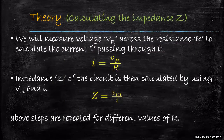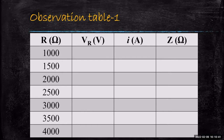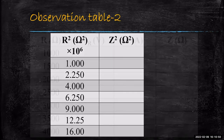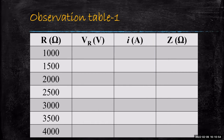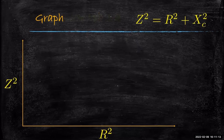Let's look at the observation table. The first column is R — different values of R. The second column is the voltage across the resistance VR. The third column is the current calculated using Ohm's law, and the fourth column is Z calculated from Vin and I. For demonstration we take R values from 1000 to 4000 ohms in steps of 500 ohms. Once we have R values, Z values are computed, and then we create a second table with R² and Z². We plot Z² versus R², and since Z² = R² + Xc², this should be a straight line.